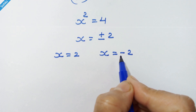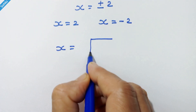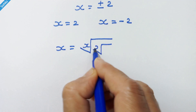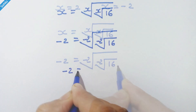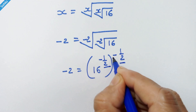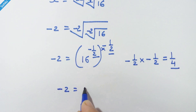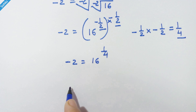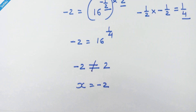I think we should check this answer in the main equation. Let's check minus 2 first. The main equation is x is equal to x root of x root of 16. Substituting x is equal to minus 2 leads to a contradiction, so x equals minus 2 is an extraneous solution — it emerged when we raised both sides to x square in equation p. Therefore x is equal to 2 is the only answer.